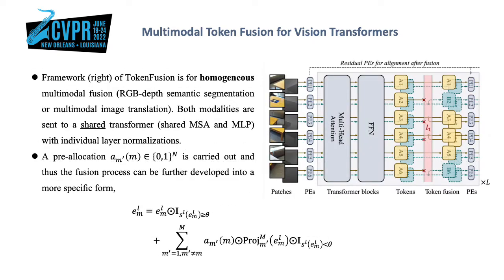The framework on the right is for homogeneous multimodal fusion — for example, RGB-D semantic segmentation or multimodal image-to-image translation. Both modalities are sent to a shared transformer, including shared multi-head self-attention and multi-layer perceptron, with individual layer normalizations. A pre-allocation is carried out, and thus the fusion process can be further developed into a more specific form as shown in this slide.